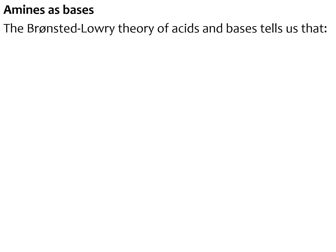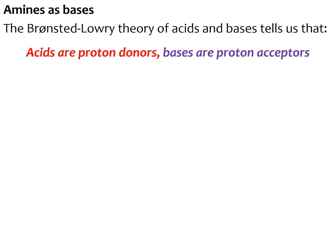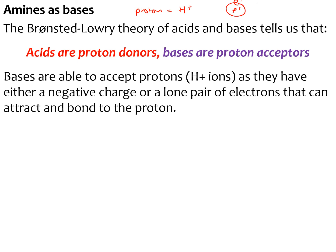The next thing is looking at amines as bases. The Bronsted-Lowry theory tells us that acids are proton donors and bases are proton acceptors. A proton is an H+ ion — it's a proton in the center with an electron around the outside, so if we remove the electron to form H+, we just end up with a proton. Bases are able to accept protons or H+ ions as they have either a negative charge or a lone pair of electrons, and that is linked to the strength of bases.